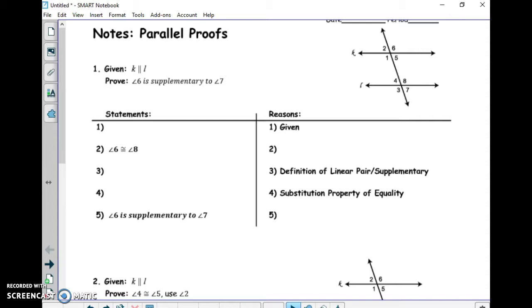Every time we do a proof, we're always starting with something that is given, and then we're trying to prove something that says proof. Let me give you the easiest part of proofs. Step one is always given. You always start with what's given.